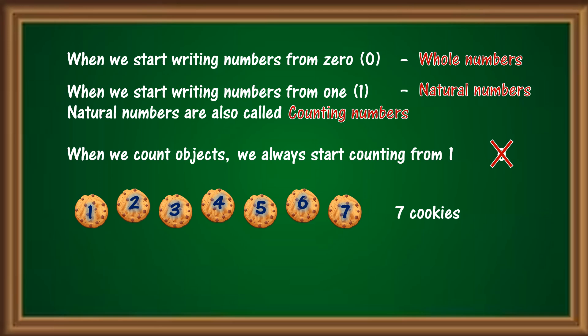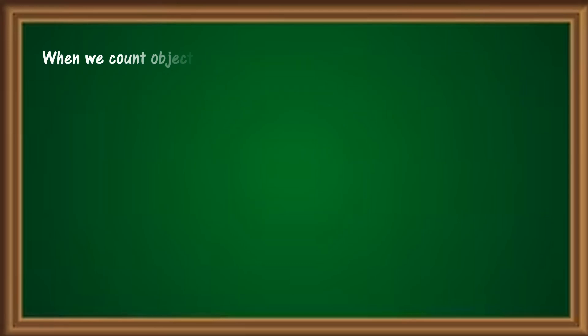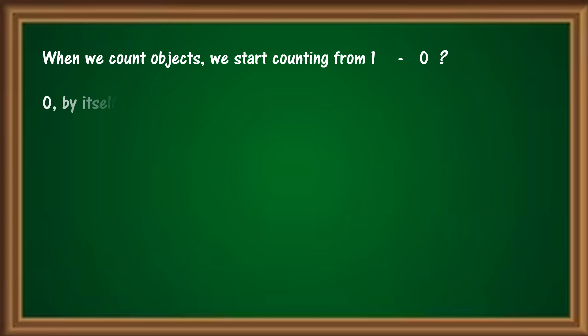Before we proceed, let me ask you a question. When we count objects, we always start counting from 1. Why not from 0? Because 0 by itself does not have a value.